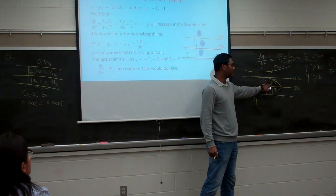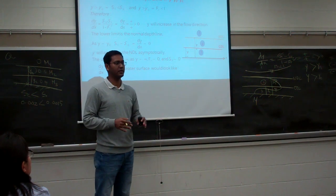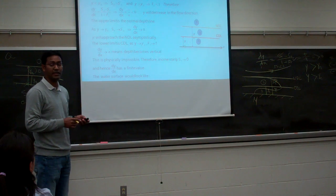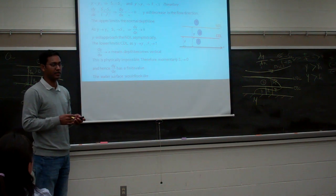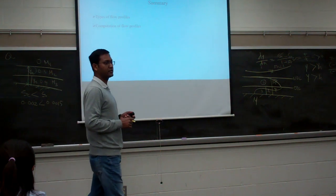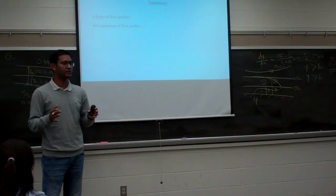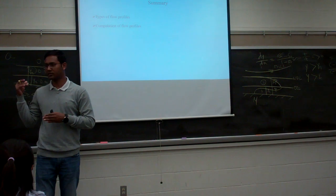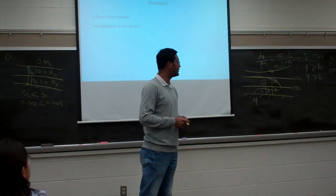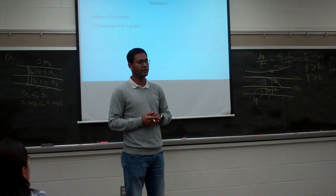It is called drawdown when it is located in zone three for mild slope. But for steep slope, it will be different, and for critical slope, it will also be different. This is how we can compute the type of profile, whether it is a backwater or a drawdown curve. So we have understood that there are 13 different types of flow profile, and if it is critical slope, the profile will be called C1, C2, C3, and so on.